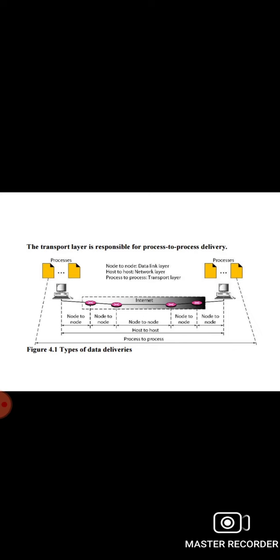The destination port number is needed for delivery, and the source port number is needed for the reply. In the internet model, port numbers are 16-bit integers between 0 and 65535. The client program defines itself with a port number chosen randomly by the transport layer software running on the client host. This is called the ephemeral port number.